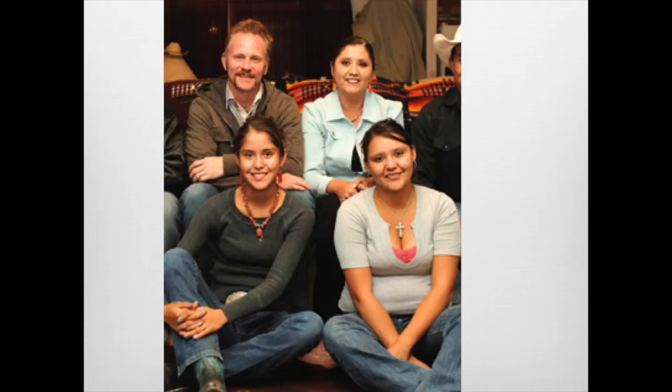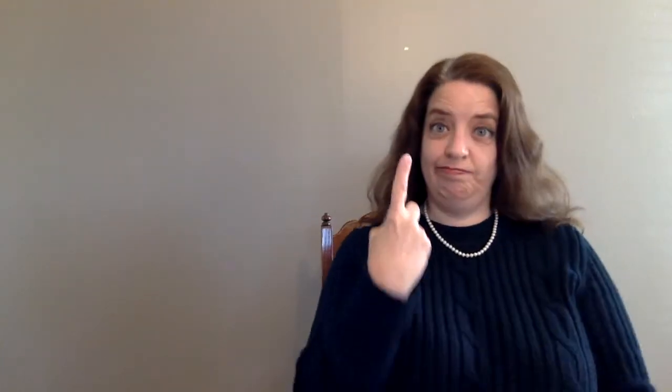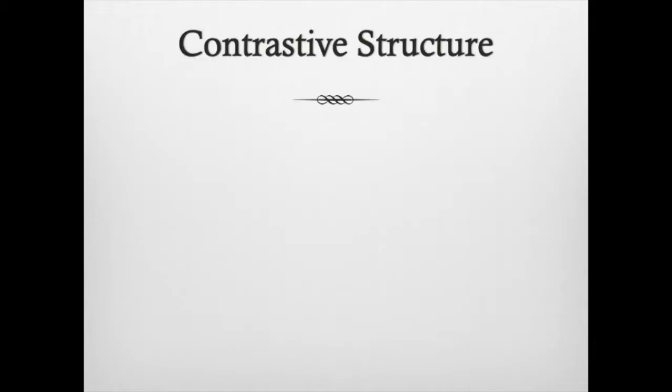The first example I gave you was Jackie, the girl in the green shirt. It was really straightforward — she has one sister, and I just signed it in that straightforward manner. But when I introduced you to little Yoko, I wanted to emphasize the fact that she was an only child. So I said she has no brothers and no sisters. If you watch how I did that, you'll notice I shifted my shoulders when I talked about brothers, and then shifted my shoulders again when I talked about her not having any sisters. Then I came back into the middle to say she's an only child.